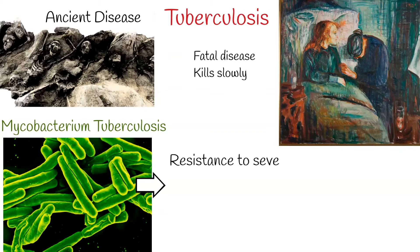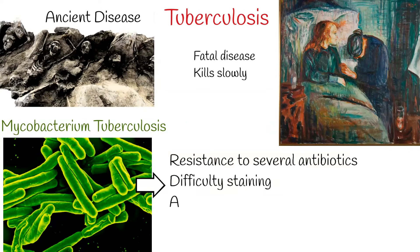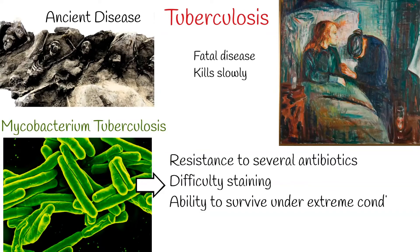The properties of Mycobacterium tuberculosis include resistance to several antibiotics, difficulty staining with gram stain and several other stains, ability to survive under extreme conditions such as extreme acidity or alkalinity, low oxygen situations, and intracellular survival within the macrophage.